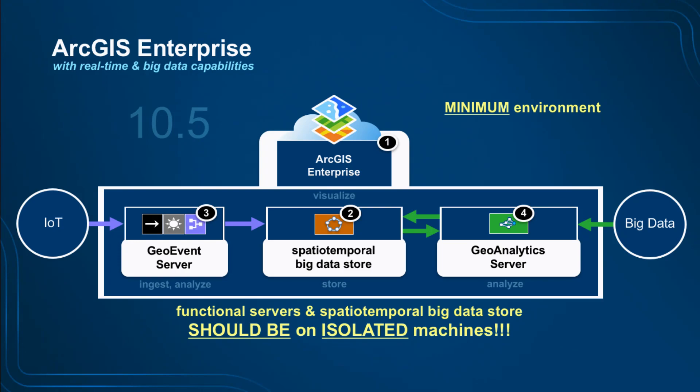The Spatial Temporal Big Data Store is very I/O, network, and RAM intensive. GeoEvent continuously writes in, and as data is written, lots of indexing happens to prepare data for on-the-fly aggregations and general queries — this indexing is constantly happening, which is disk I/O and CPU intensive. Queries from feature or map services also contend for the same CPUs and RAM. Putting all components on isolated machines is the best practice. Co-locating is typically the first mistake we see when customers call us with incidents.